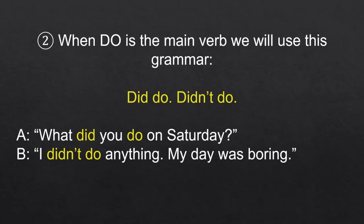When 'do' is the main verb, we use this grammar: 'Did do' and 'didn't do.' For example: 'What did you do on Saturday?' 'I didn't do anything — my day was boring.'